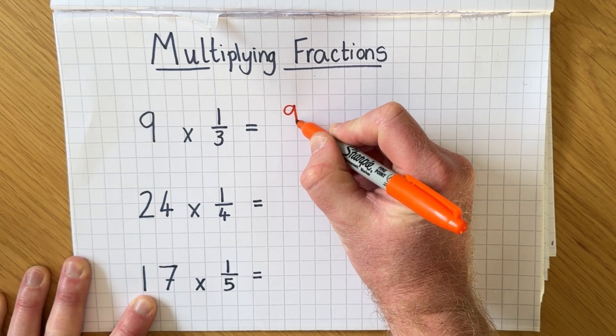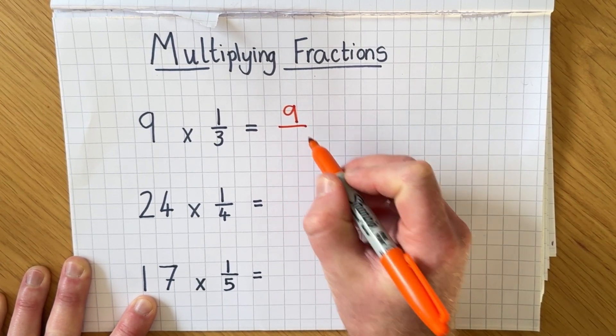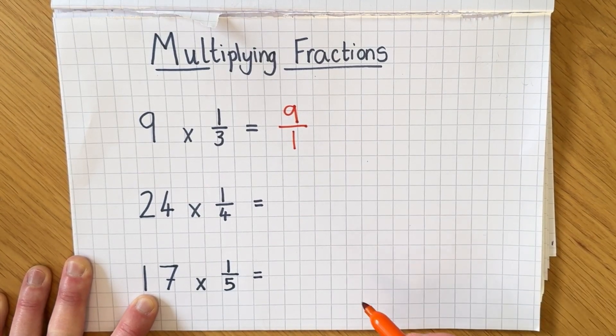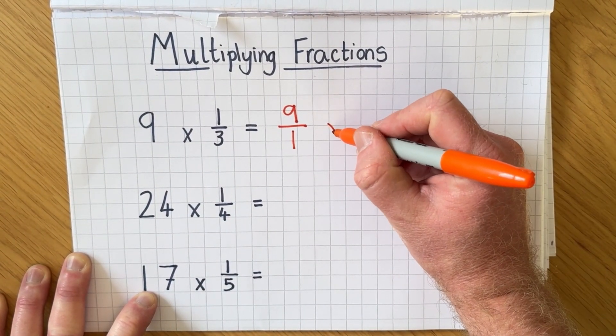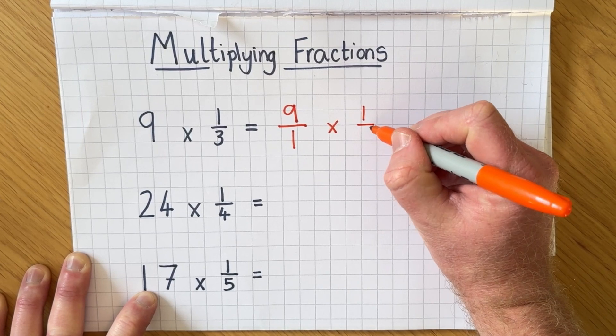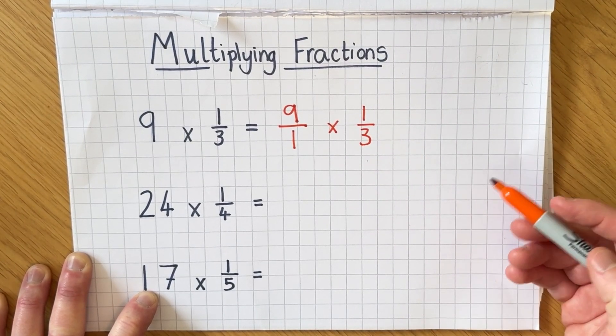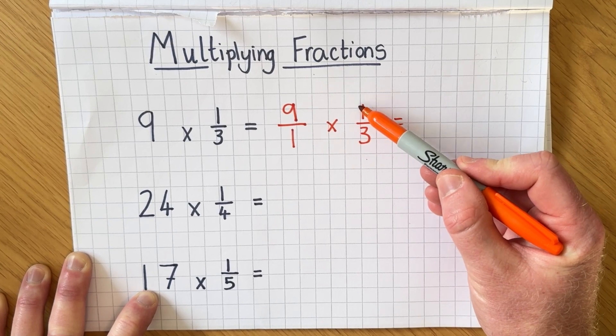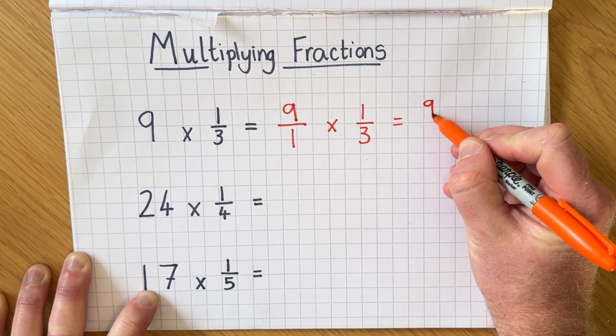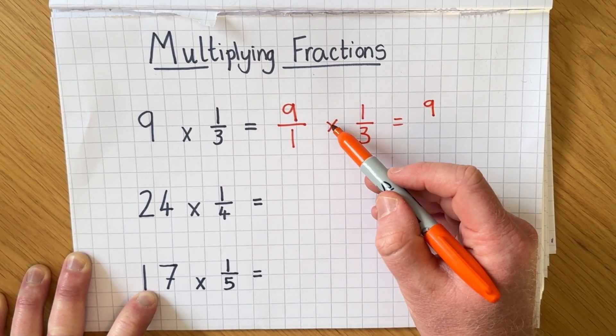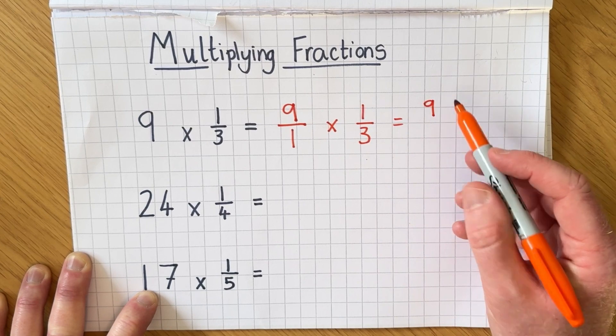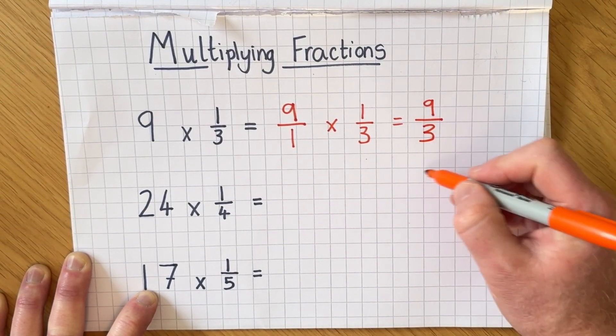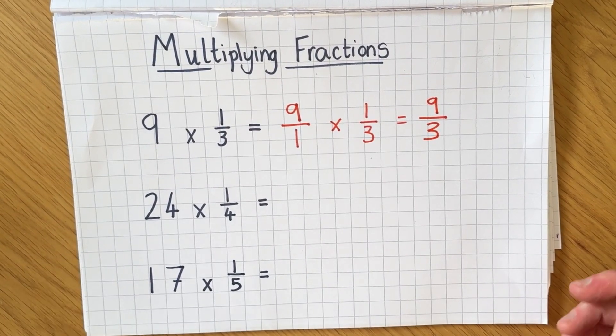So 9 as an improper fraction is going to be 9/1. So it's nine whole ones and then all we do is we multiply it by 1/3 and then the rest is easy because all you do is 9 multiplied by 1 is 9 and then multiply the denominators together, 1 times 3, that makes 3 and we're left with an improper fraction.